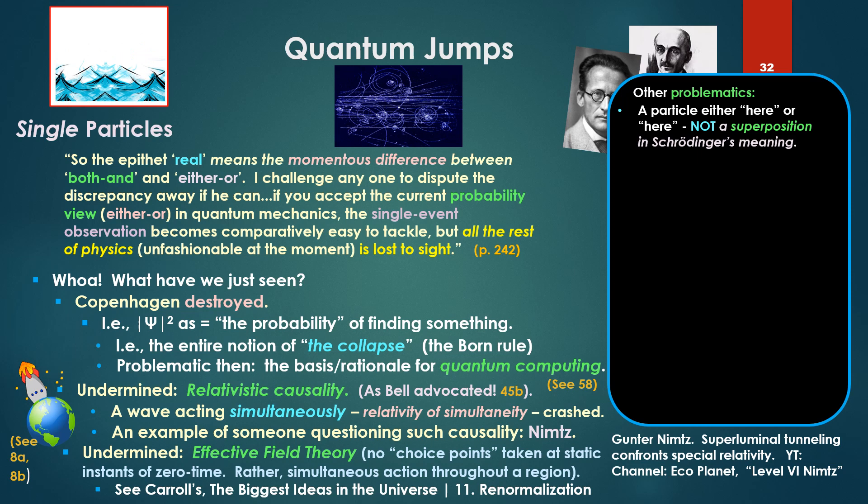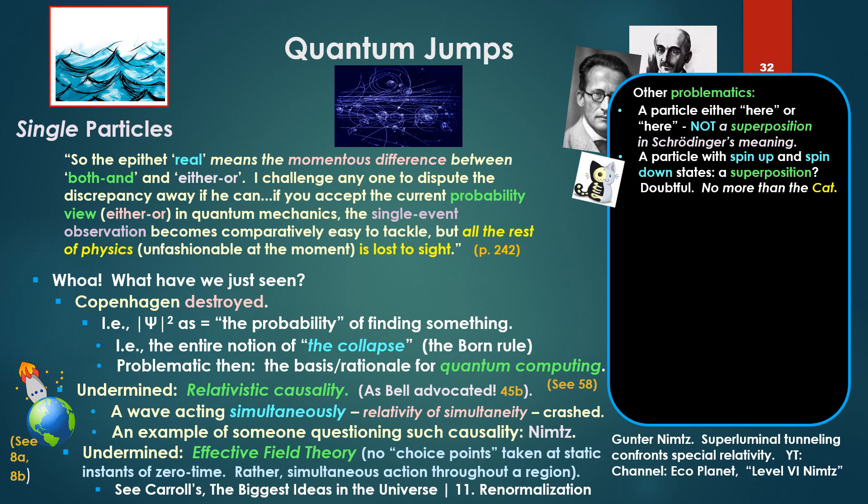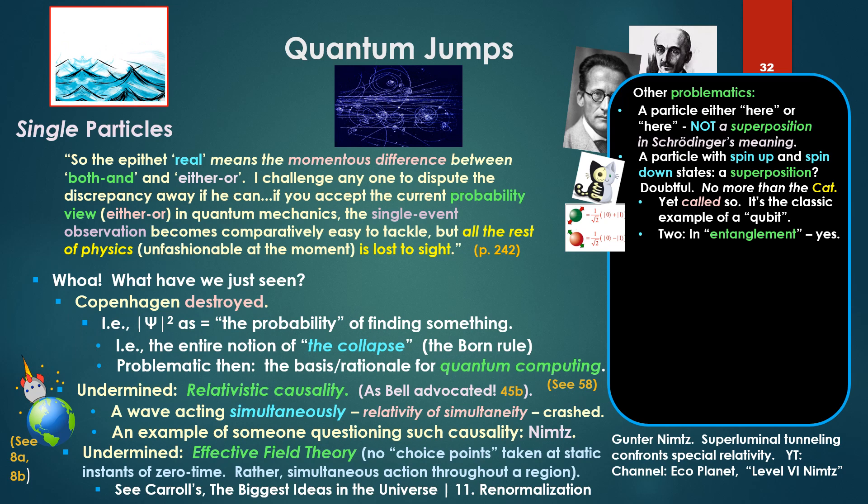Other problematics. A particle, either here or here, as Stuart Hameroff liked to say. I don't think this is a superposition in Schrödinger's meaning. It is in terms of the superposition of normal modes or proper modes. A particle with spin-up and spin-down states, a superposition. Again, I think, doubtful, no more than the cat. Dead or alive, which Schrödinger argued has no reality. Could not be true. Yet, this is called so. It's the classic example of a qubit. Now, two particles in spin-up or spin-down in entanglement. Yes, this is Schrödinger's own term. But entanglement has a different meaning than superposition.